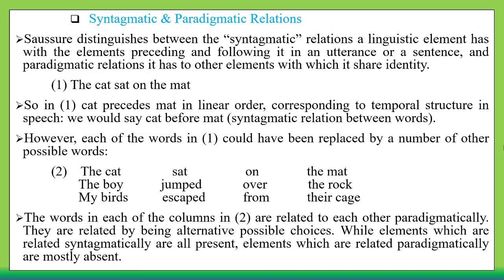Another dichotomy is syntagmatic and paradigmatic relations. Saussure distinguishes syntagmatic relations — the relations a linguistic element has with the elements preceding and following it in an utterance or sentence — and paradigmatic relations, which concern other elements with which a given element shares identity and can be replaced.